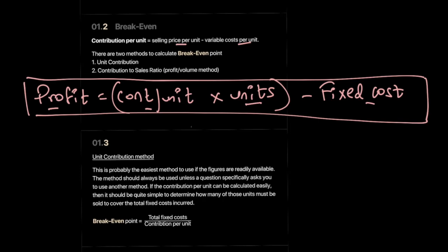To calculate the breakeven point we can use two methods: the unit contribution method and the contribution to sales ratio method. The unit contribution method is an easy way to calculate the breakeven point when all figures are available — selling price per unit and variable cost per unit. We can calculate the breakeven point in units as total fixed cost divided by contribution per unit. Let me show how this is derived.